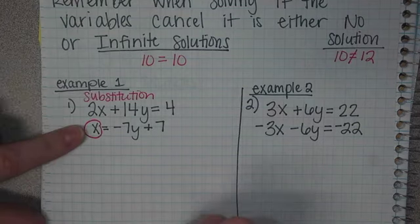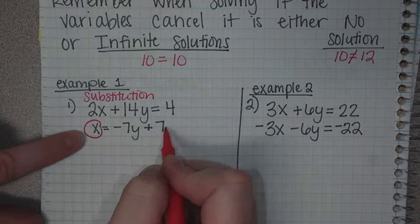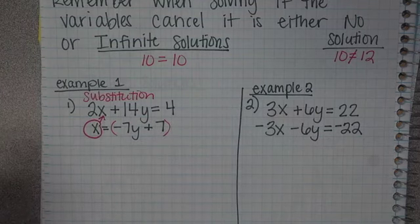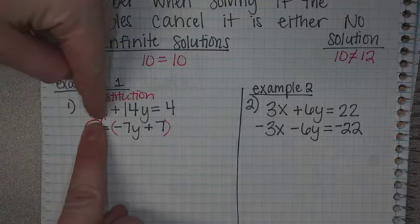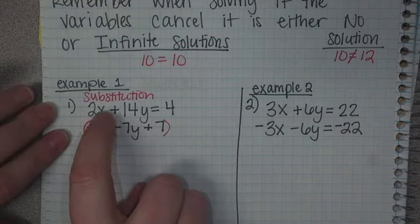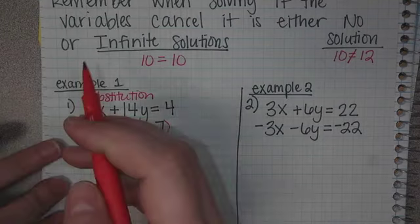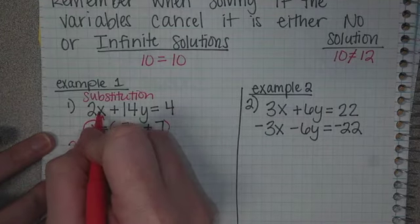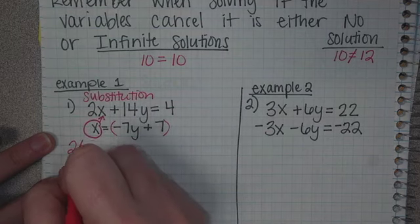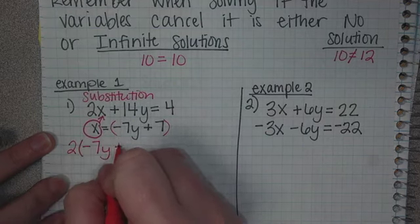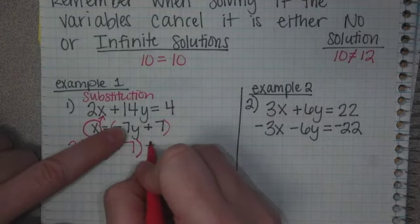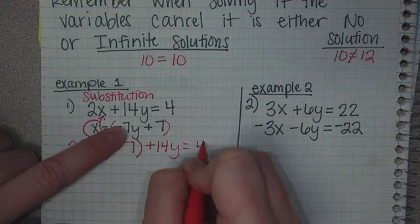Since it's x equals this information, I'm going to take out my x and cover up the x in the other one. All of that information gets written in for that x. The two stayed the same. Change the x to this, so put parentheses, negative 7y plus 7, close parentheses, plus 14y equals 4.